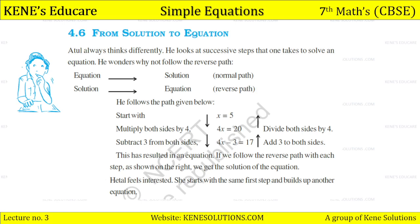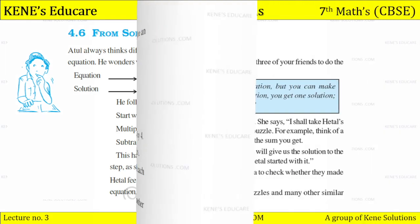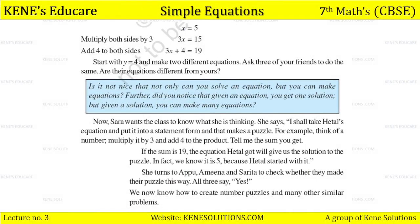Hetal feels interested. She starts with the same first step and builds up another equation. She made another equation. So x equals 5. She multiplied by 3, so 3x equals 15. And she added 4, so 3x plus 4 equals 19. So start with y equals 4 and make two different equations. Ask three of your friends to do the same. Are their equations different from yours? Yes, they will be different.